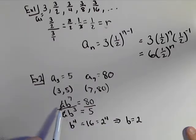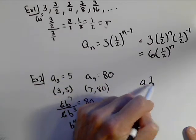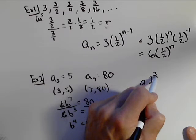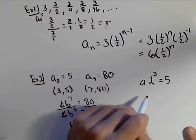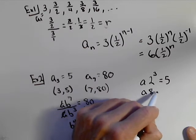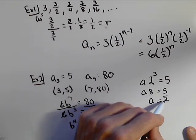And the other thing we need is our a. We can plug it into either one to get our a. So we know that a times two cubed is equal to five, or a times eight equals five. So a equals five eighths.